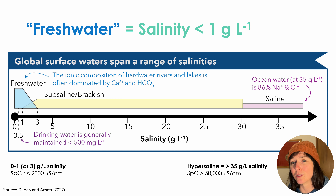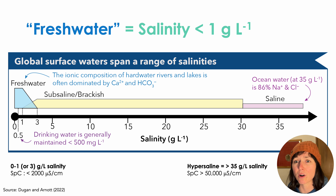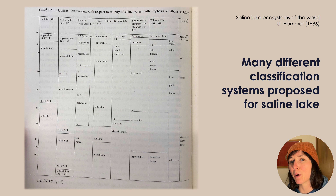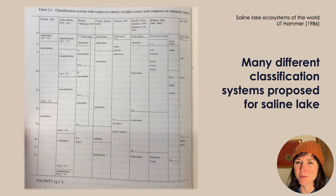Lakes with salinities greater than 3 grams per liter are referred to as subsaline or just saline lakes. The water in saline lakes is referred to as brine, meaning a salty solution. And notably, many of the largest lakes on Earth are saline, including the Caspian Sea, Lake Van, and Lake Turkana. But the majority of the hundreds of millions of lakes on Earth are freshwater lakes. In the history of limnology, many different classification systems have been proposed for saline lakes, with varying terminology. This figure from Hammer shows the agreement and disagreement between saline lake nomenclature.